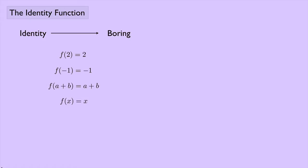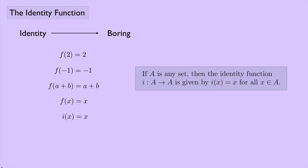And since it is kind of a special function, an especially boring function, we'll label it as i of x instead of f of x to denote i for identity. Here's the definition. If A is any set, then the identity function i, which goes from A to A, is given by i of x equals x for all x in A.